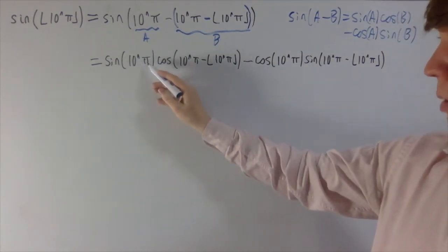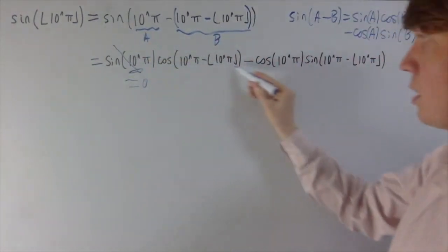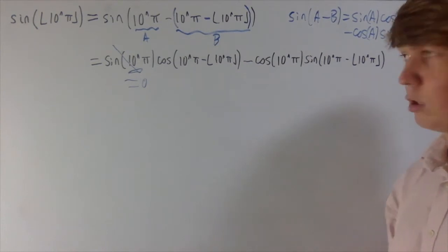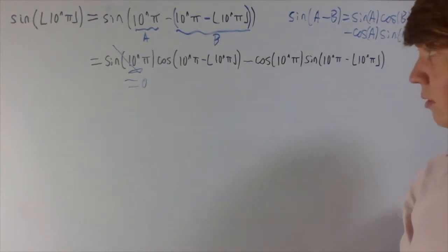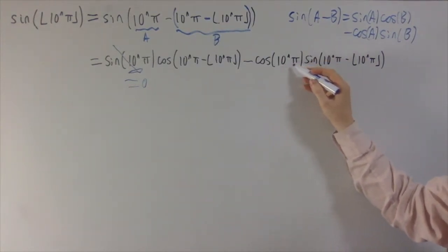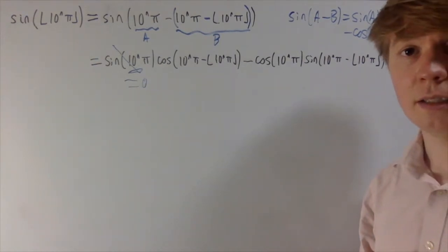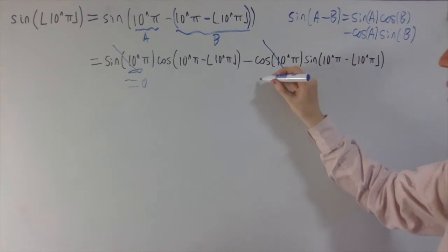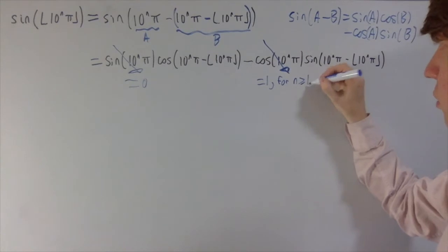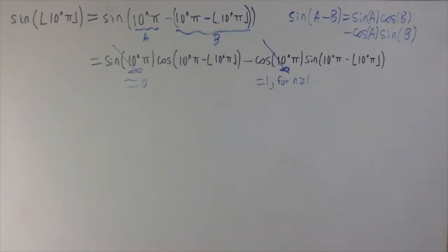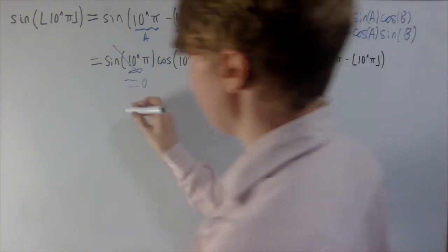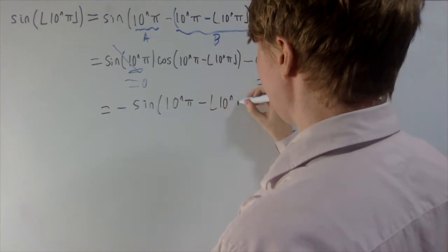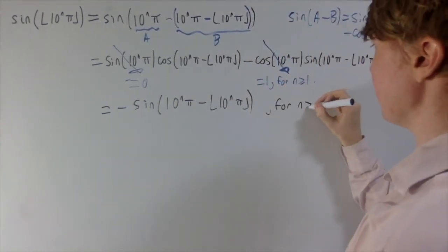We have sin of an integer multiple of π, which equals zero — this kills off the entire first term. We also have cos(10ⁿπ): when n = 0 this is cos(π) = −1; when n ≥ 1 we have cosine of an even multiple of π, which always equals 1. Since we're taking the limit as n → ∞, this tidies up to simply −sin(10ⁿπ − floor(10ⁿπ)) for n ≥ 1.